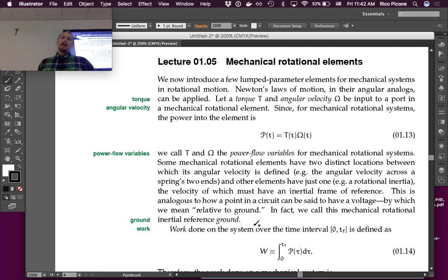Whereas some elements have just one. A rotational inertia, like a flywheel, only has one angular velocity, but it's always implicitly referenced to ground.